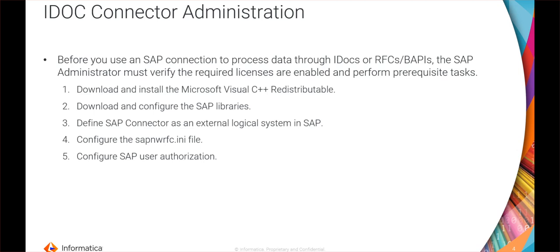Next is defining the SAP connector as an external logical system in SAP. This step, along with configuring a SAP user role decision, needs to be done completely in the SAP system. Defining the SAP connector as an external logical system includes creating a logical system in SAP, creating a corresponding RFC, and creating partner profiles and ports corresponding to these RFCs. From those details, we configure the INI file. This connection uses a type R connection, so it will have a destination with a unique name, the program ID given in the RFC, and the gateway host and gateway server details.